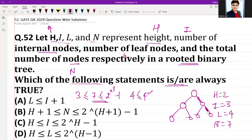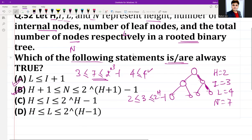Option C: H is less than or equal to I. H is height 2, I is 3, which is less than or equal to 2 to the power H minus 1. That is 2 to the power H minus 1, which is 2 to the power 2 minus 1 equals 3. So 2 is less than or equal to 3, and 3 is less than or equal to 3. This is also mapping.